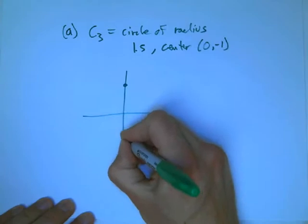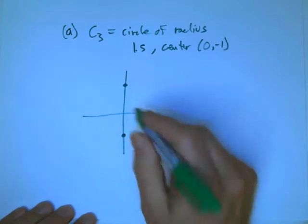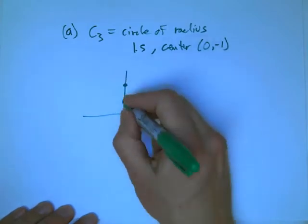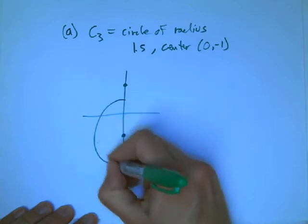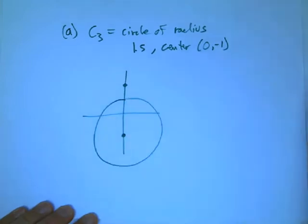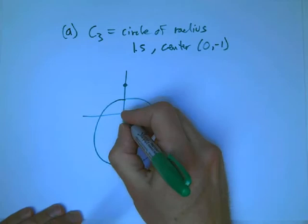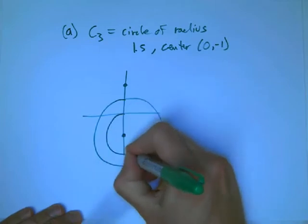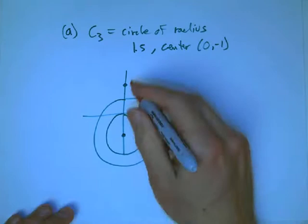Okay, so here's the two points where something interesting might happen. C3, circle of radius 1.5 with center (0, -1), that's here. What was our reference circle? Actually, if I draw the reference circle more carefully, I think it was exactly this circle. It didn't really matter.